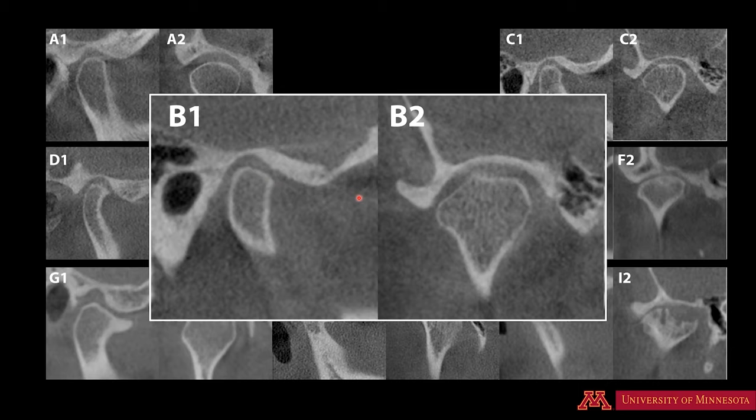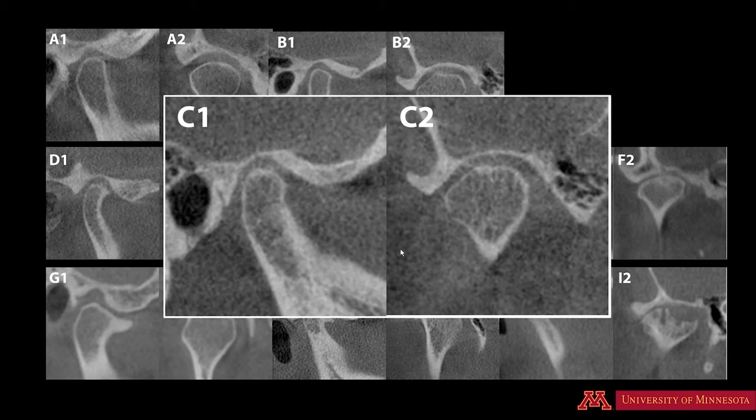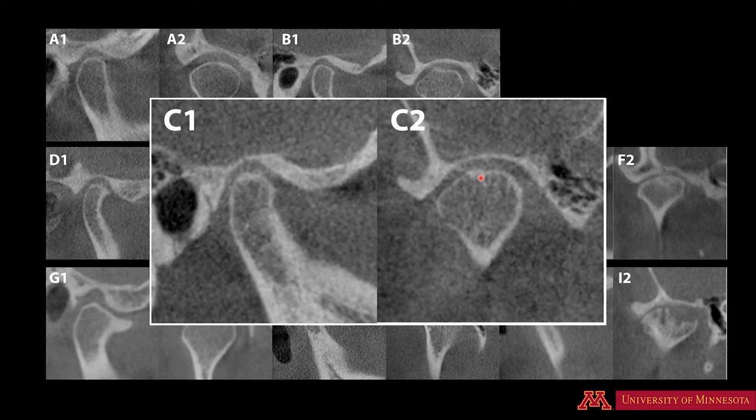On B1 and B2, we see flattening of the anterior slope or flattening of the lateral slope. There is no discontinuity, no osteophyte, no erosion, no subcortical pseudocyst, so we'll call this joint remodeling. On the next patient, we have localized subcortical sclerosis and some flattening — this is also an example of remodeling. Remember that for remodeling, we need one or both features of flattening and subcortical sclerosis.